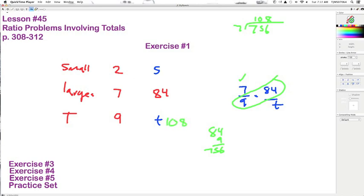And if we wanted to figure out small, we can come back here and say 2 to 9 is the same as s to 108. Multiply the loop, 216 divided by 9. That's 24. And that should be exercise 2.